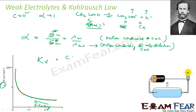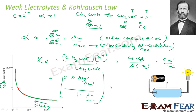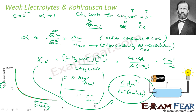To find the equilibrium constant Ka, we write: Ka = [CH₃COO⁻][H⁺] / [CH₃COOH] = Cα · Cα / C(1−α) = Cα² / (1−α). Substituting α = λm / λm°, we get: Ka = C·(λm/λm°)² / (1 − λm/λm°) = C·λm² / (λm°·(λm° − λm)). So you can find the equilibrium constant using the value of molar conductivity at a given concentration and at infinite dilution.